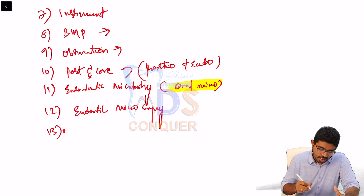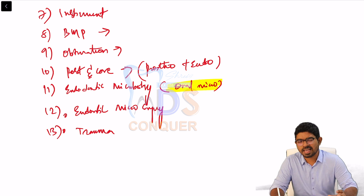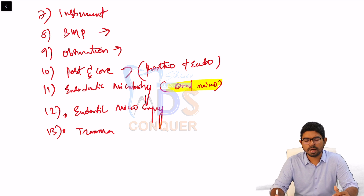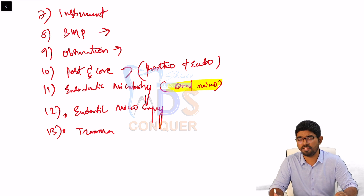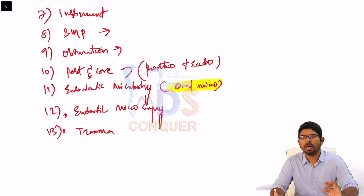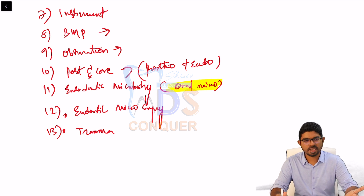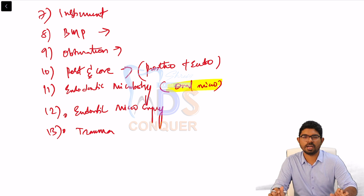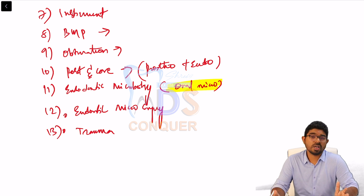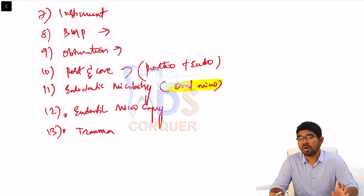Trauma must be covered. Learn the Ellis classification, the Andreasen-WHO classification, and the treatment plan for each class — what to do for concussion, primary trauma, enamel fracture, dentinal fracture, pulpal fracture. For avulsion: treatment within a certain time vs. after that time. Materials of choice to carry an avulsed tooth are frequently repeated questions that paper setters love to ask.